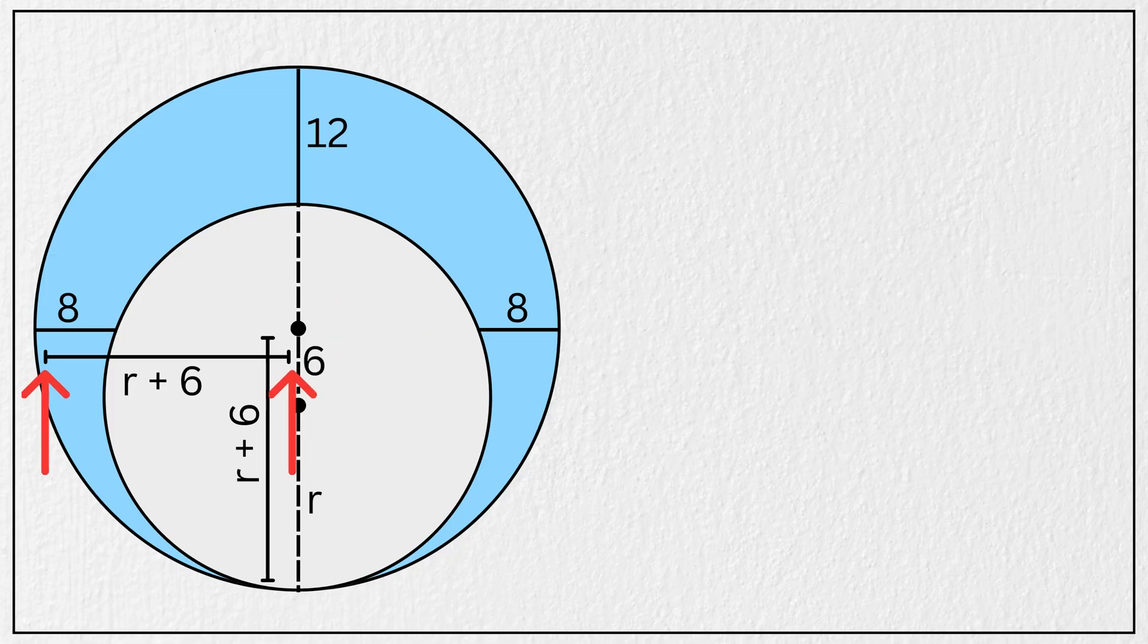and this other segment is 8 units, then this remaining part will be r minus 2 units, and by symmetry, this other side is also r minus 2 units. Correct?